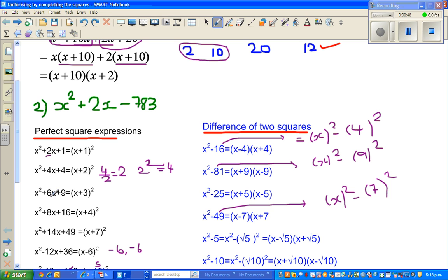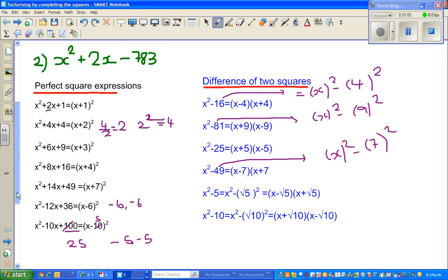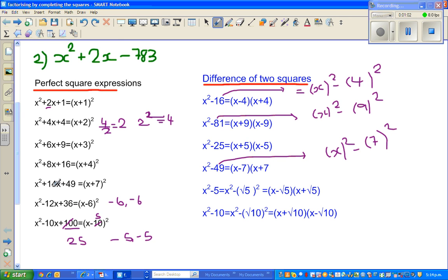So if you take x²+6x+9, this is a perfect square. How can I say that? Because when I do half of 6 it is 3 and 3²=9. Now how can I say that this is a perfect square? Because half of 14 is 7 and 7²=49.